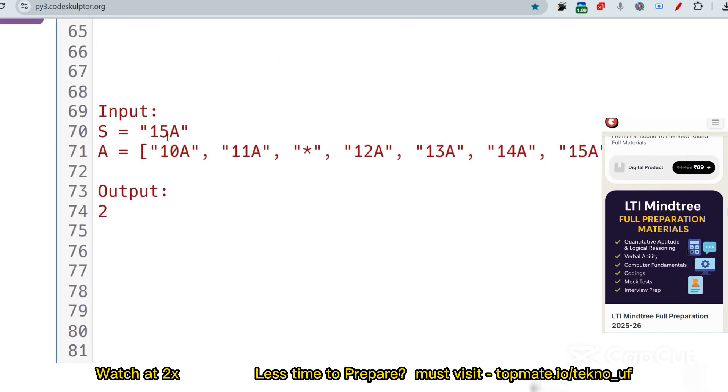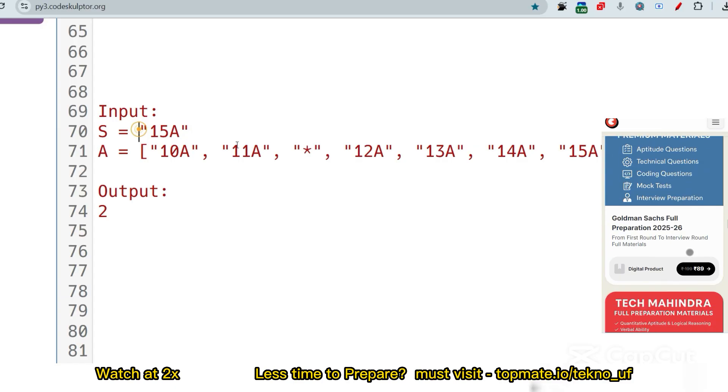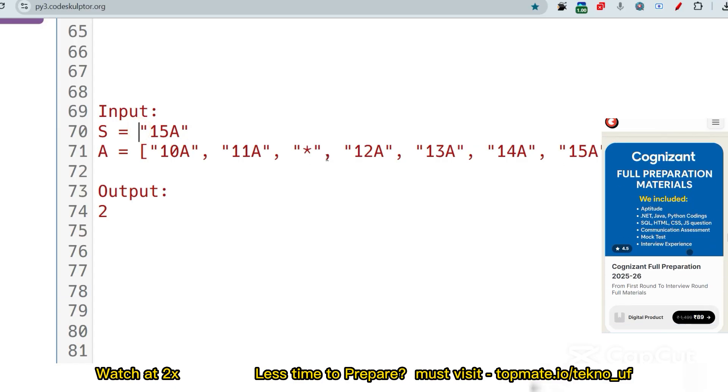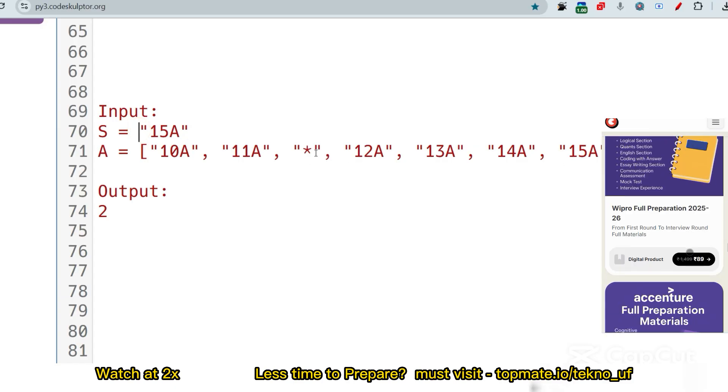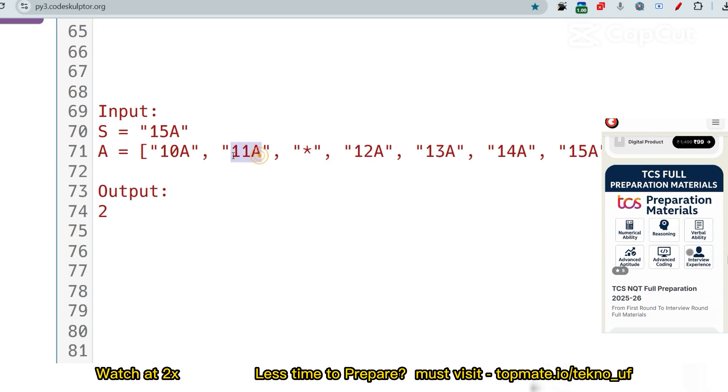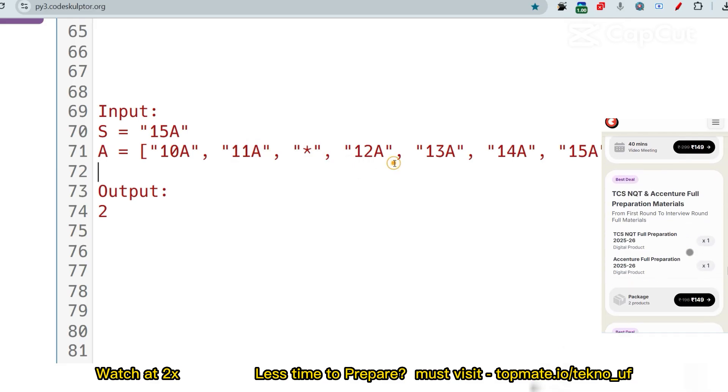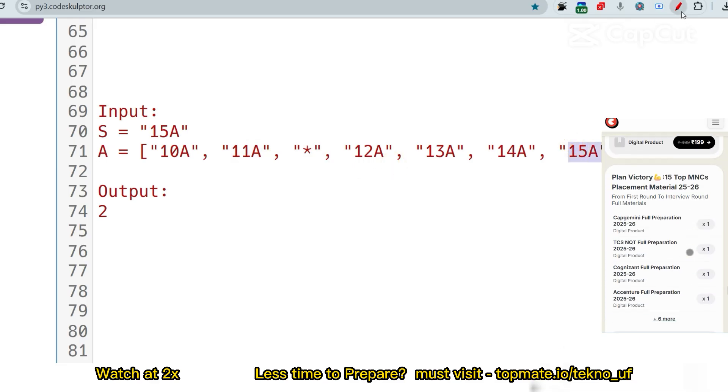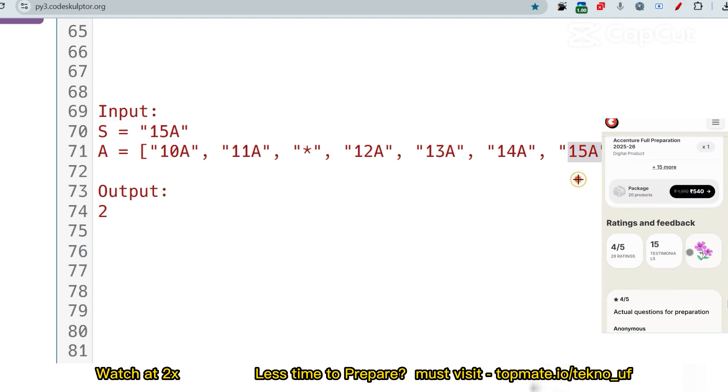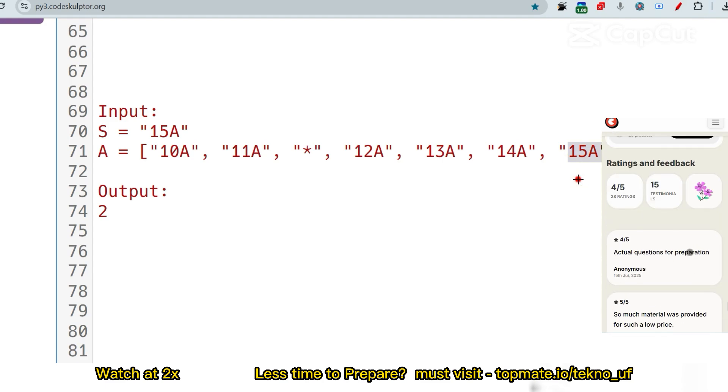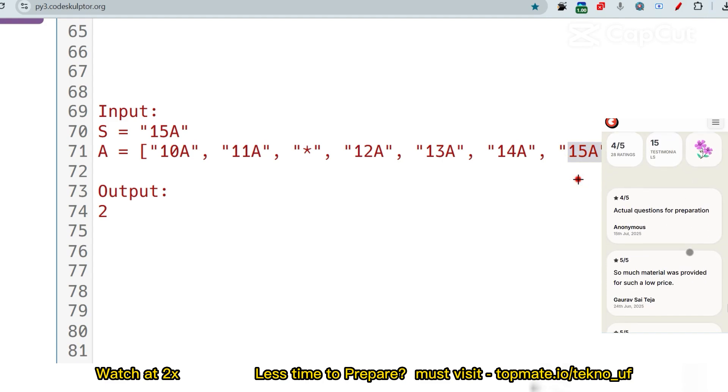And the third sample input is this. S is equal to 15A, so the seat number is 15A and the seats are arranged this way. Now you can see this is the gap and the corner seats are 11A and 12A. Now the seat is present here.